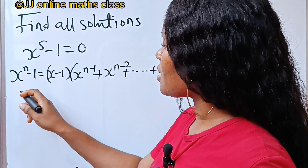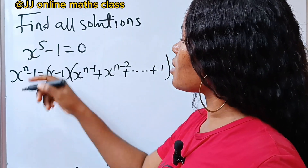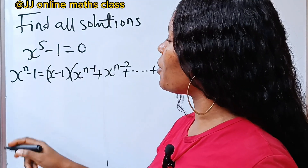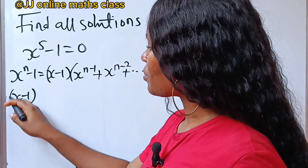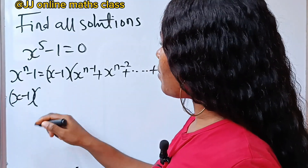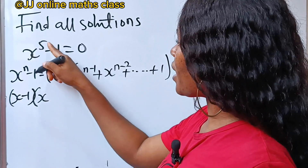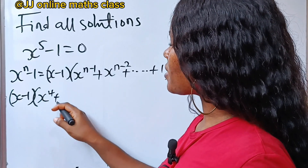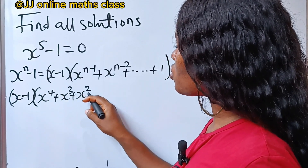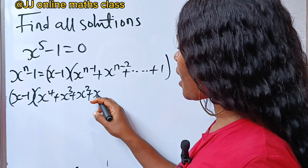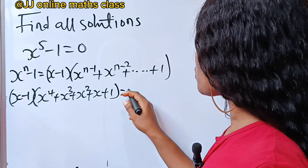We can express this with n equal to 5. So we can express this value as x minus 1 multiplied by — starting from n minus 1, that is 4 — so x to the power of 4 plus x to the power of 3 plus x to the power of 2 plus x plus 1, all equal to 0.